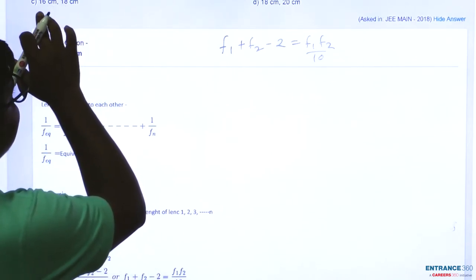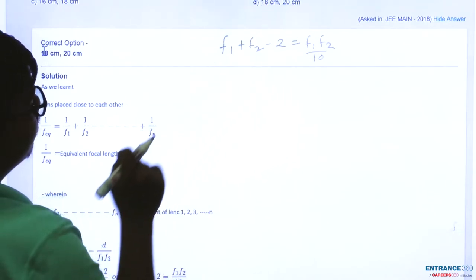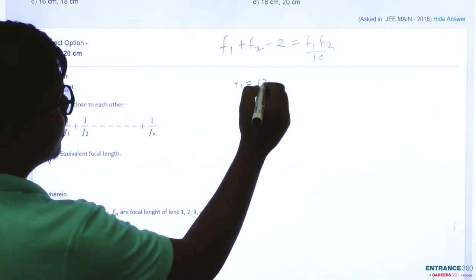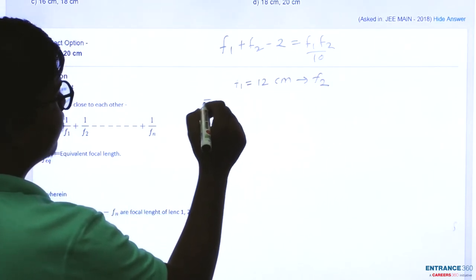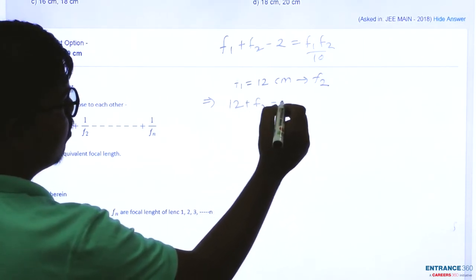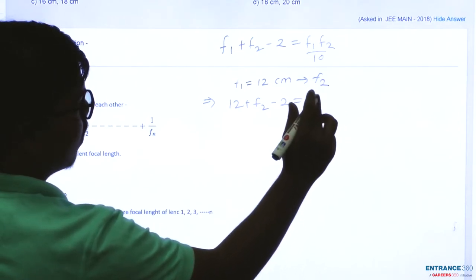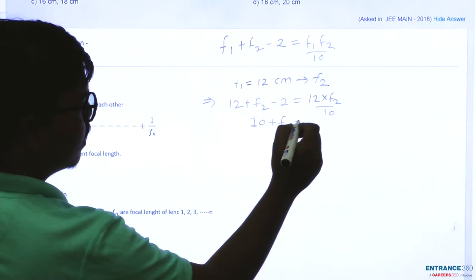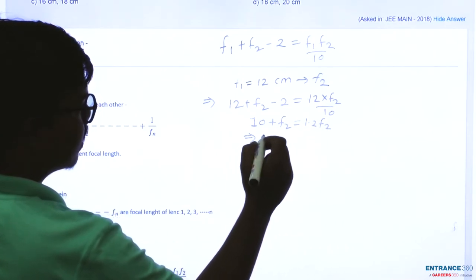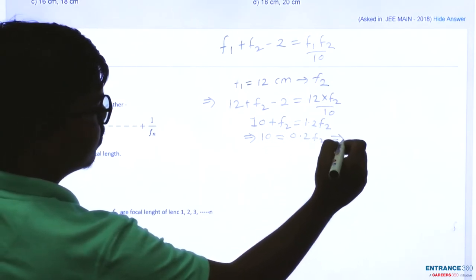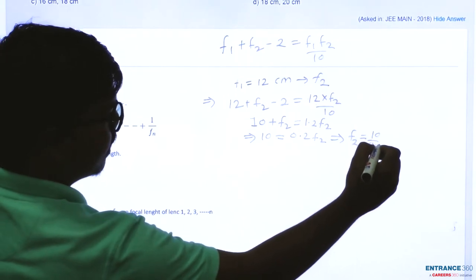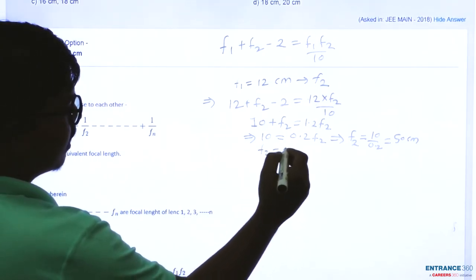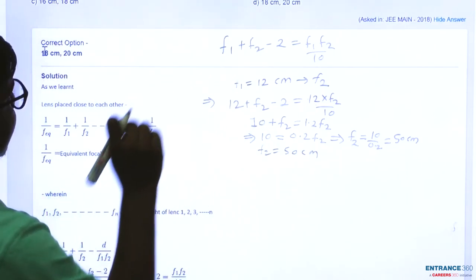Option A gives F1 as 10 centimeter and F2 as 12 centimeter, while option B gives F1 as 12 centimeter and F2 as 14 centimeter. Let's put F1 as 12 centimeter into our equation: 12 plus F2 minus 2 equals 12 times F2 upon 10, which gives 10 plus F2 equals 1.2 F2, so 10 equals 0.2 F2, giving F2 as 50 centimeter. Since F2 comes out to 50 centimeter, options A and B are both wrong.